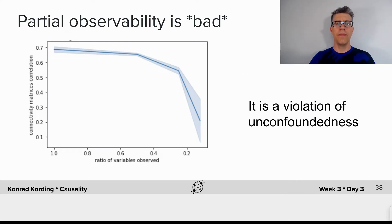So what we saw here is that partial observability is really bad. As the ratio of variables observed approaches zero, we ultimately stop being able to fit anything meaningfully.